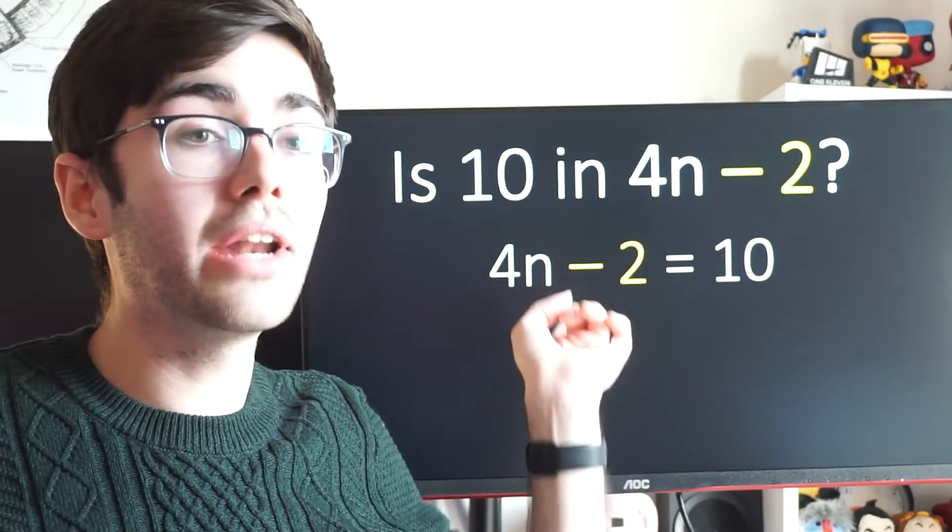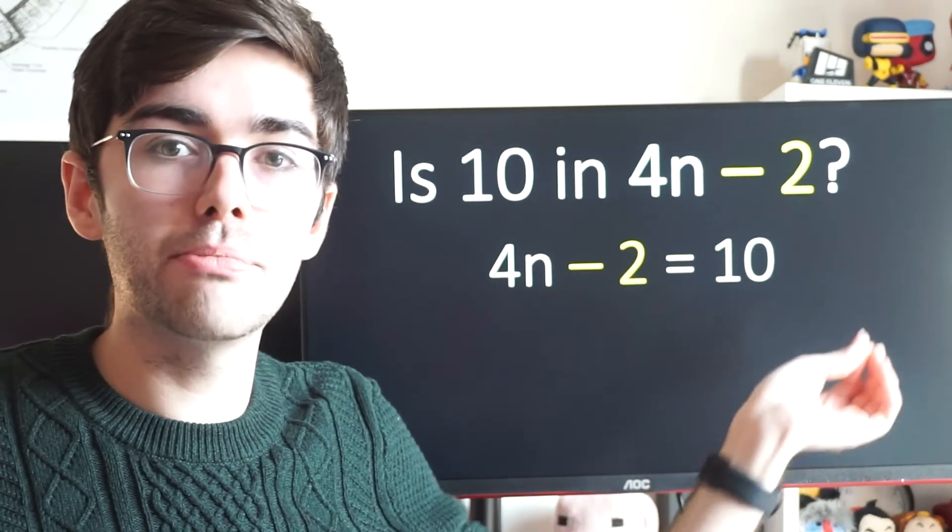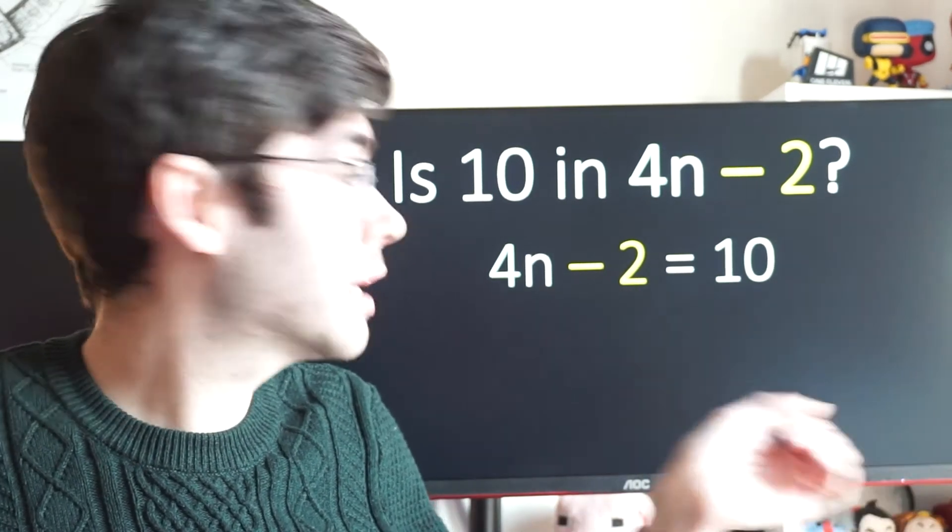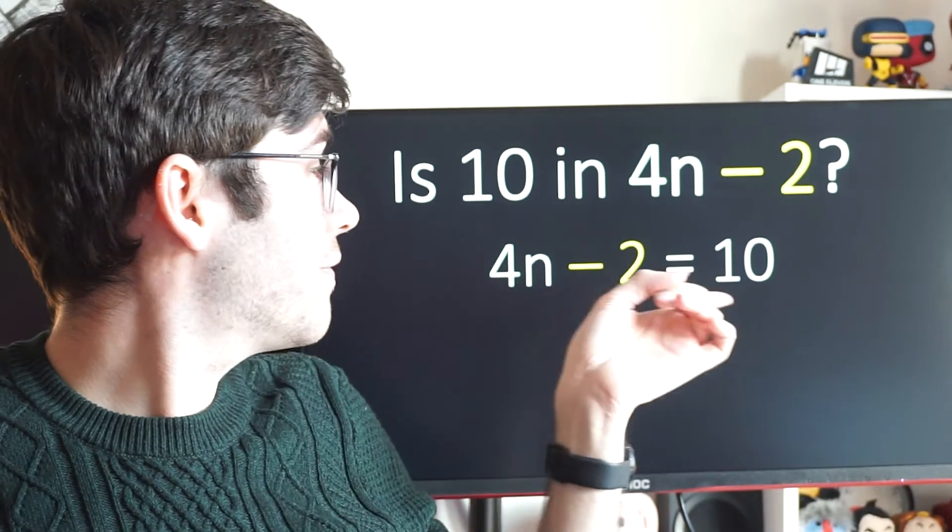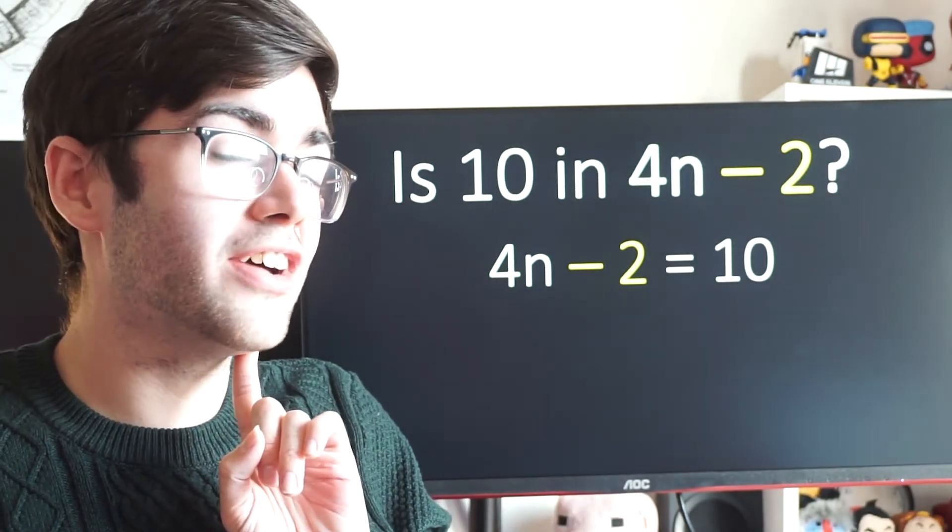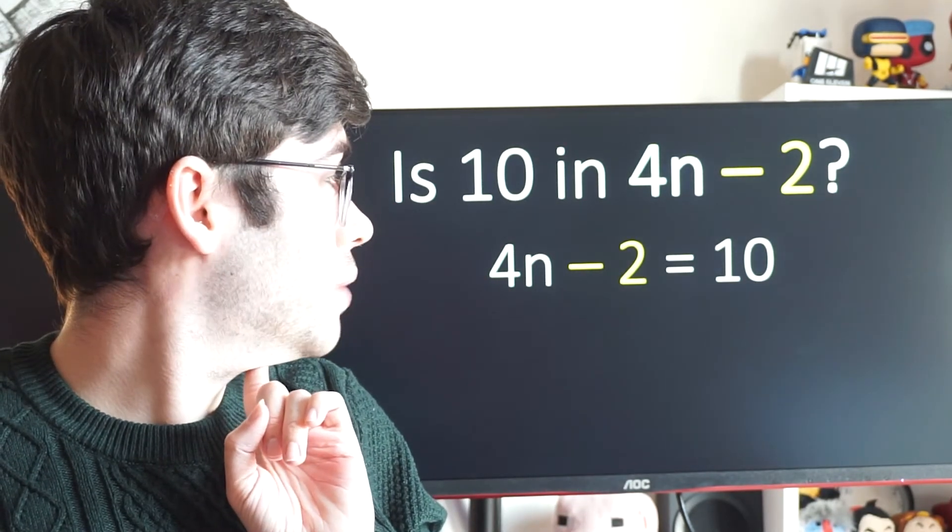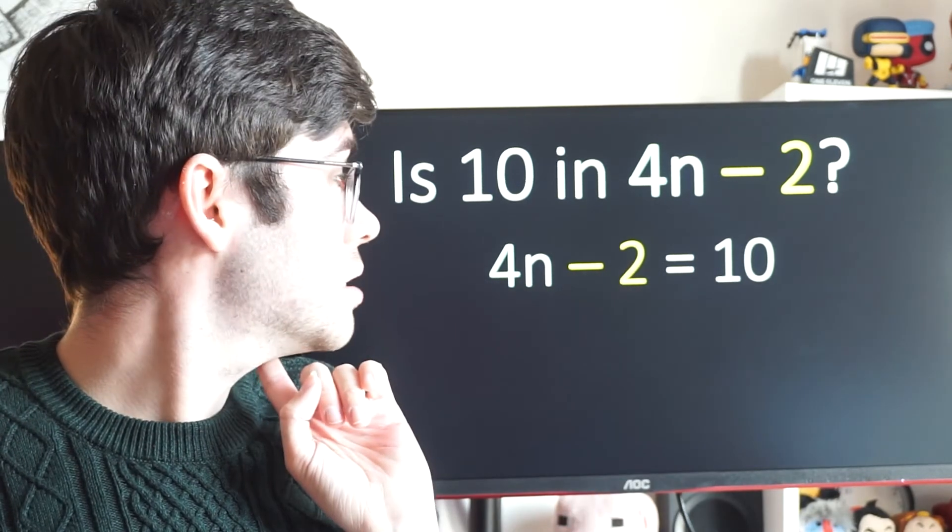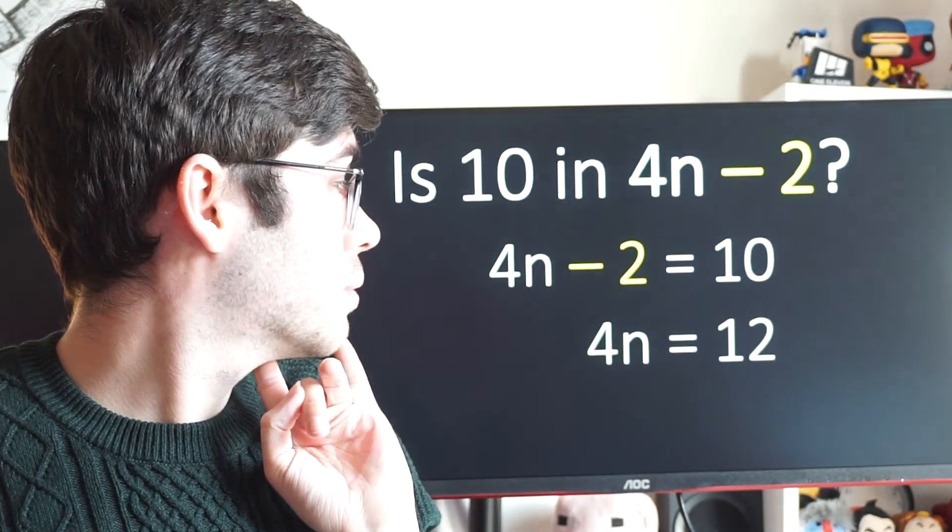4n minus 2 equals 10. I just need to know what n is. Which term gives me 10? Which term is the 10? So, if I'm solving this like a normal equation, if I want to find n, what do I have to do here? I can add 2 to both sides. That will get me 4n equals 12.